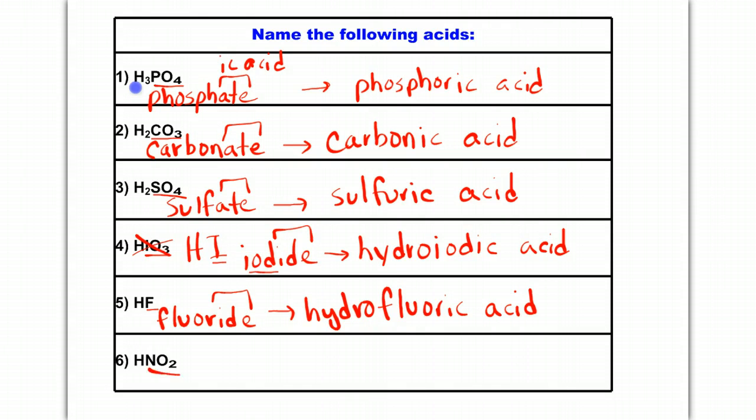The last one is nitrite. And this one ends in -ite, which means that this is going to have no prefix, and it's going to end in -ous acid. And so, this one is nitrous acid. So, be careful when there is a prefix and when there is not a prefix. That's going to be a big deal.